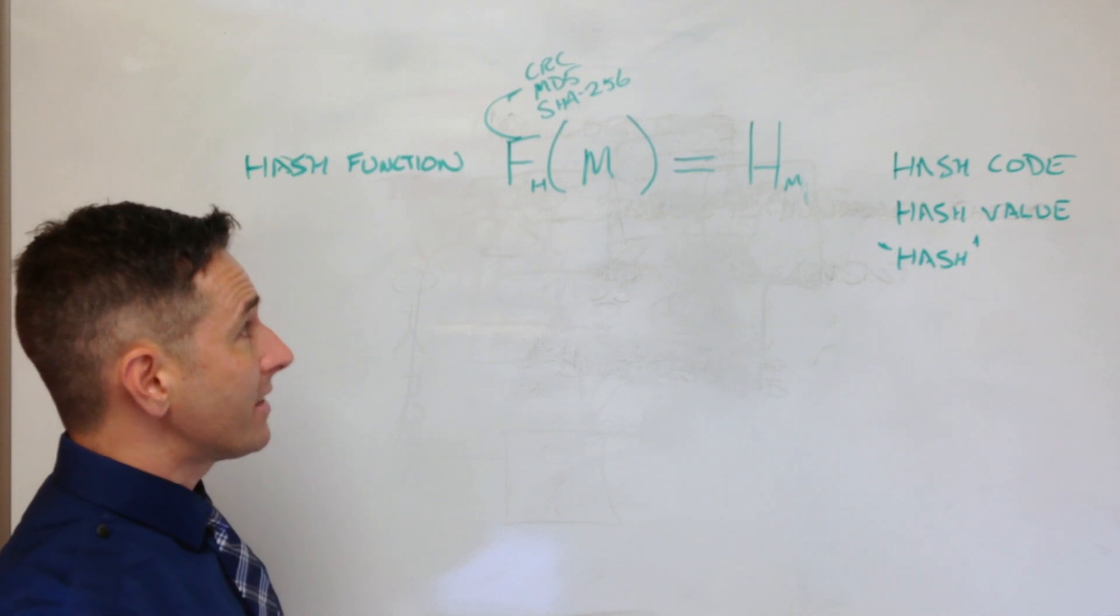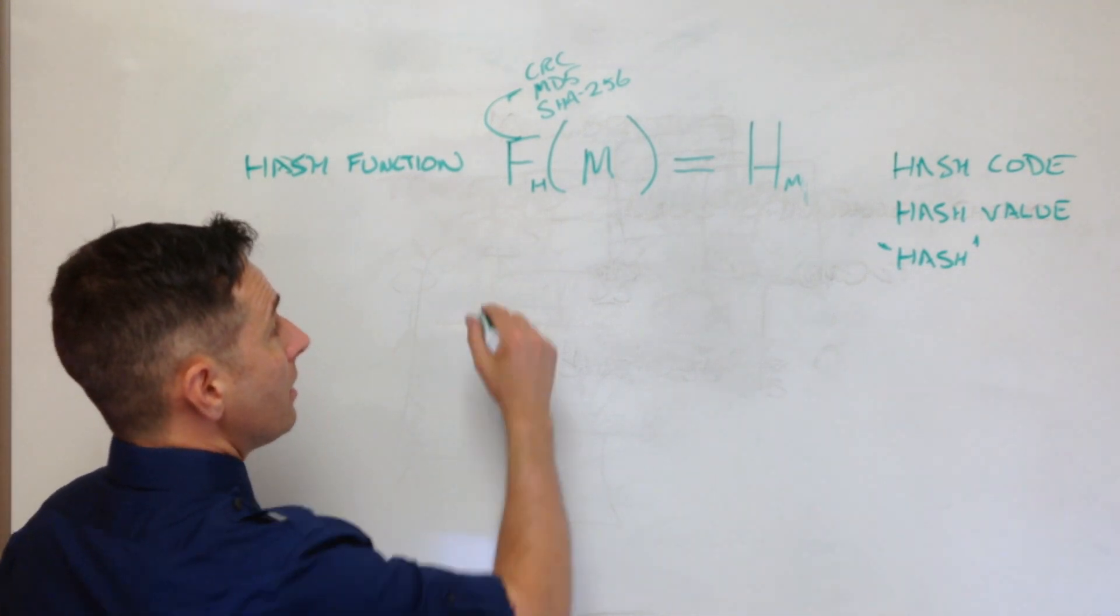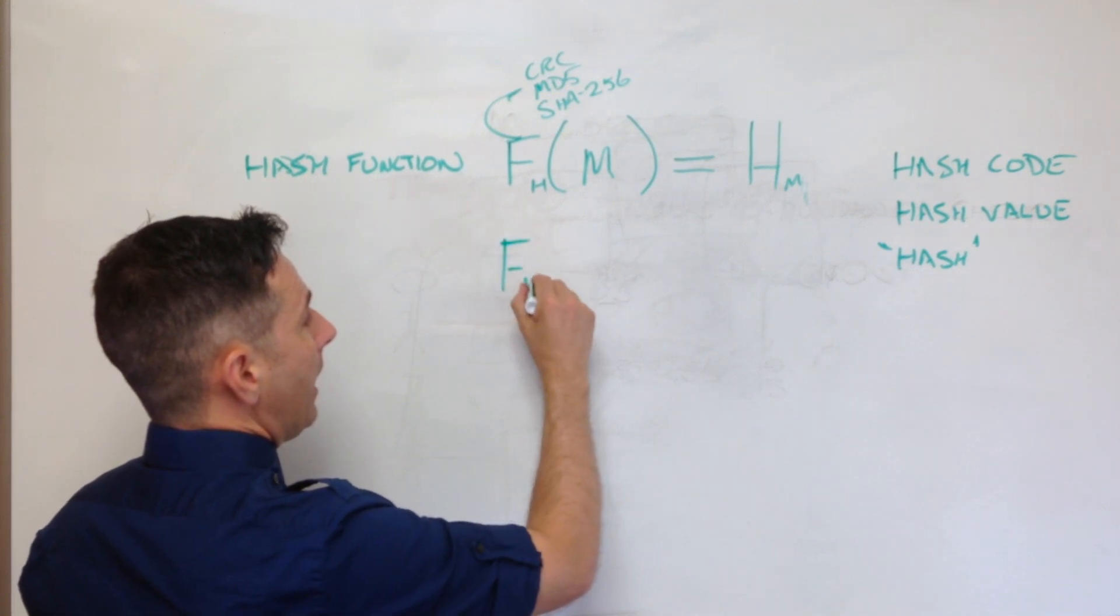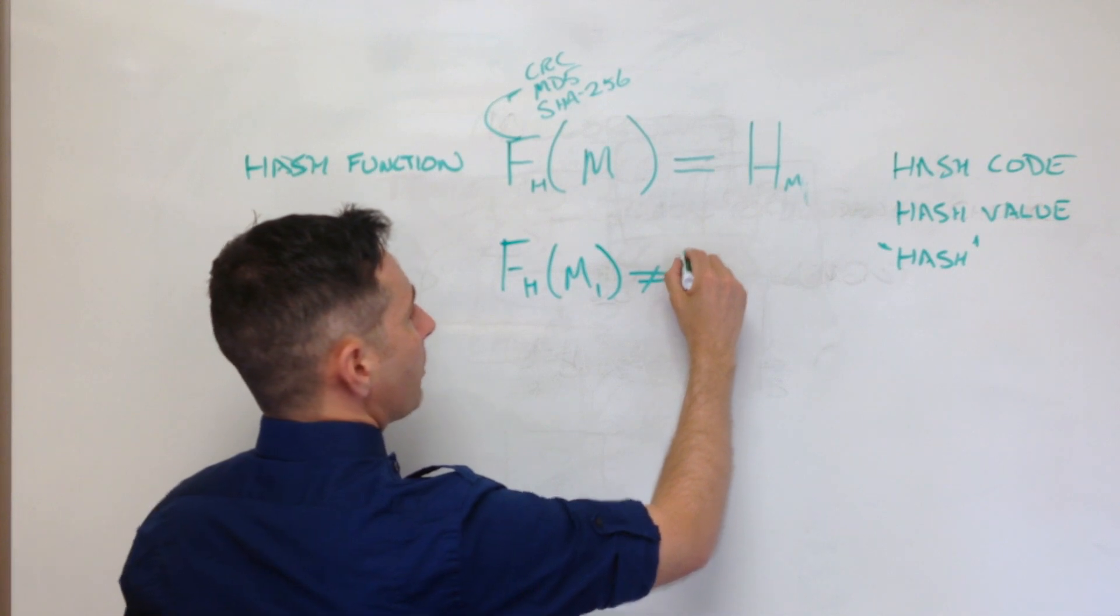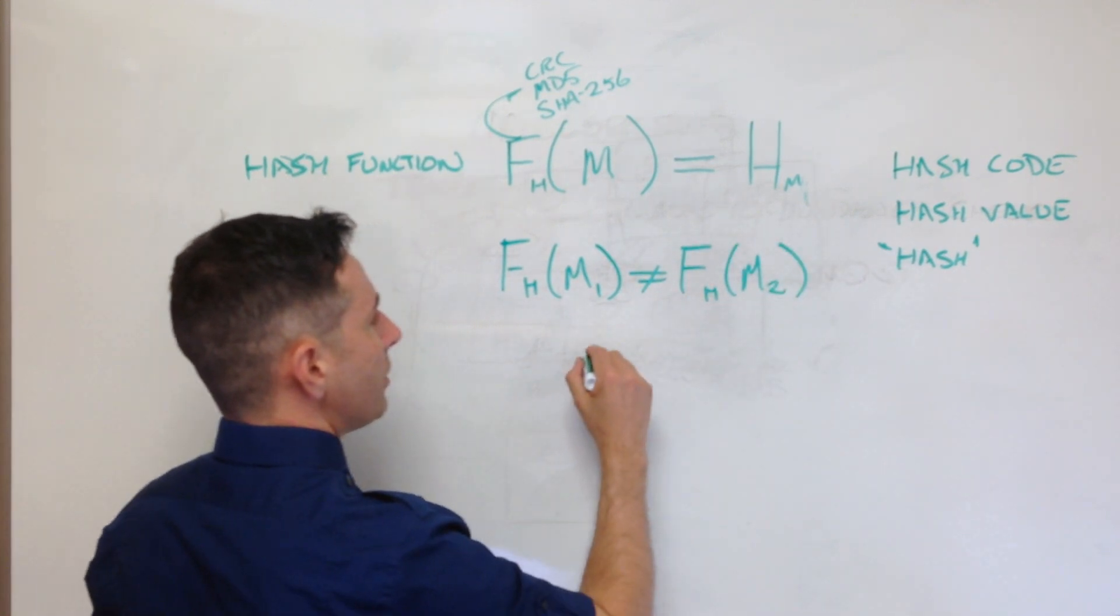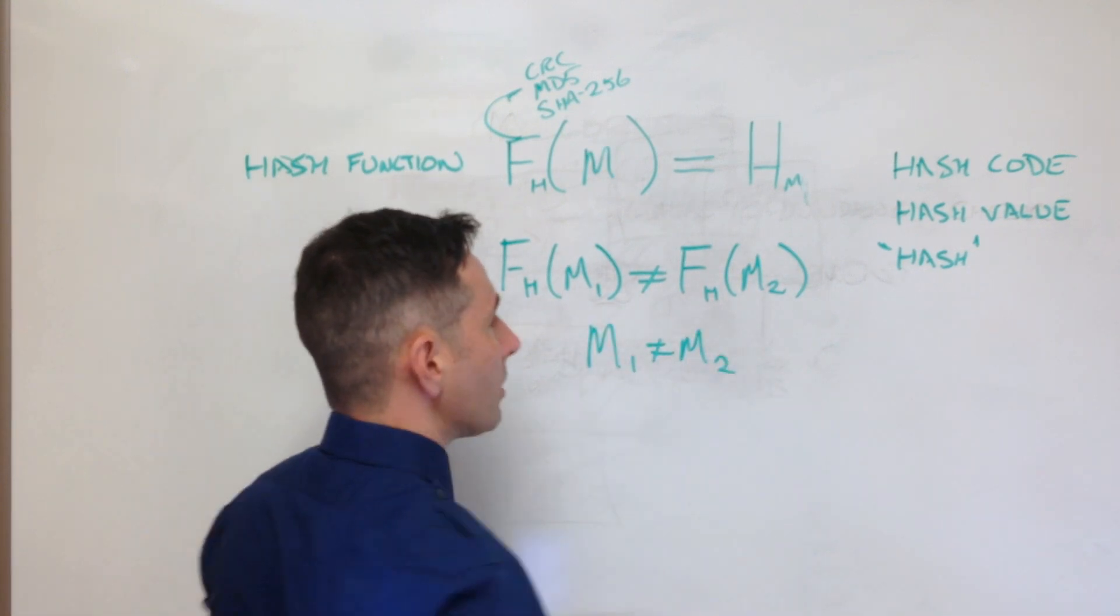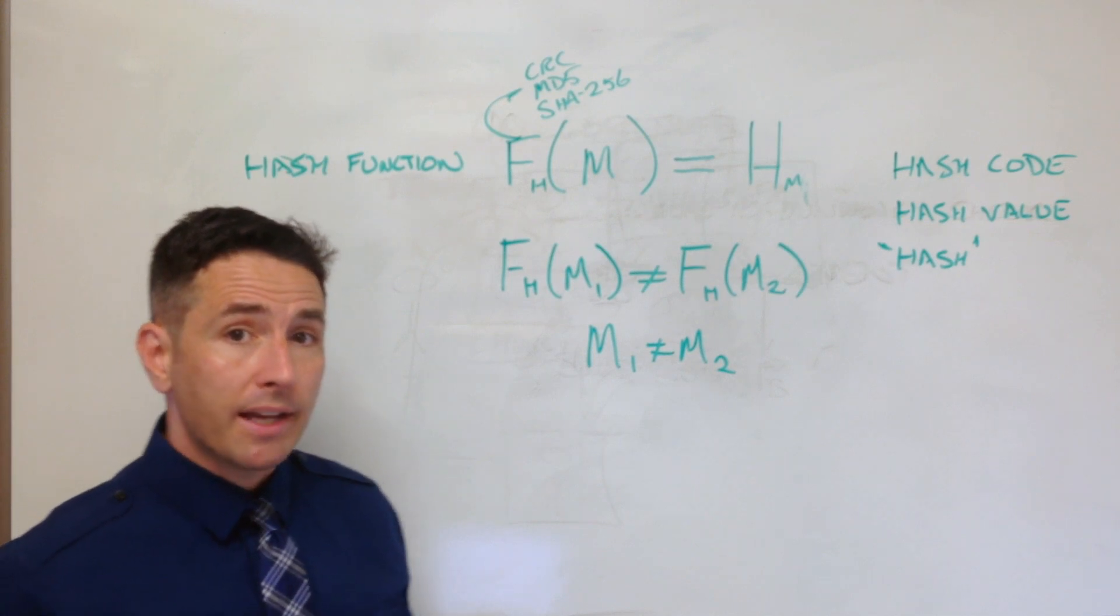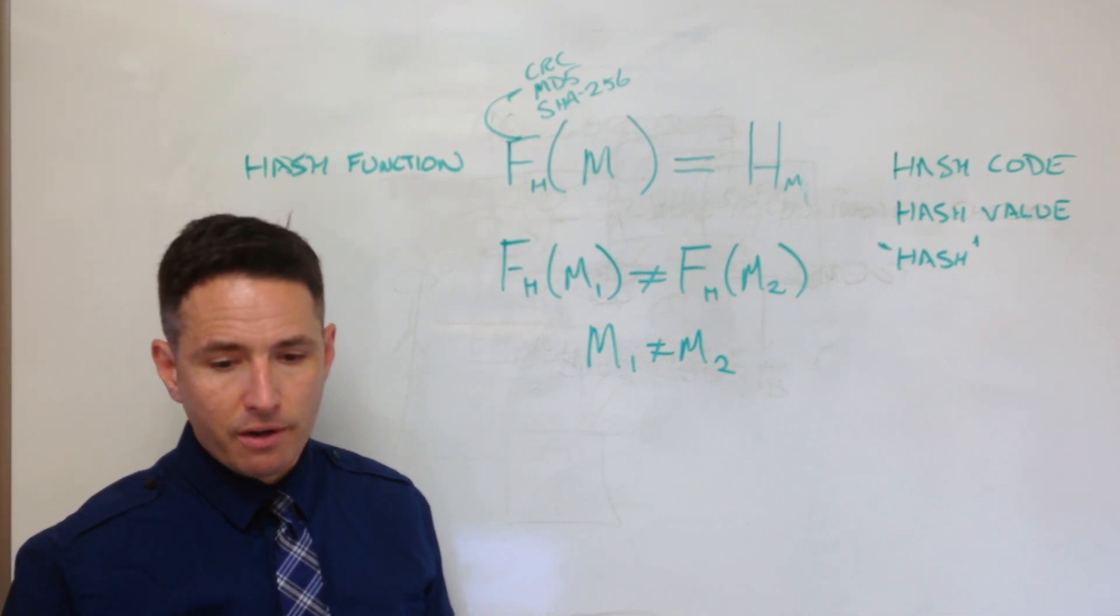So one of the things that the hash function has to do is it has to produce different fingerprints with different inputs. So it has to be the case that F_H of message 1 shouldn't equal the hash value of message 2 if M1 is not the same as M2. So that's one of the properties that you like to have of a hash function - that the fingerprints are different for different things.